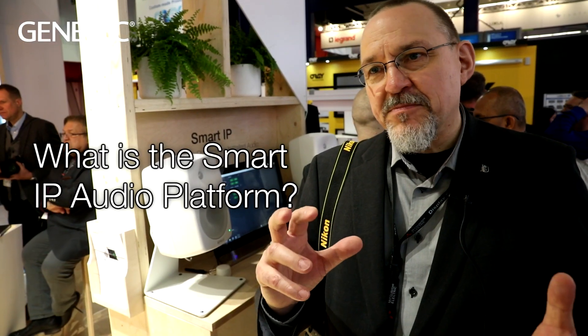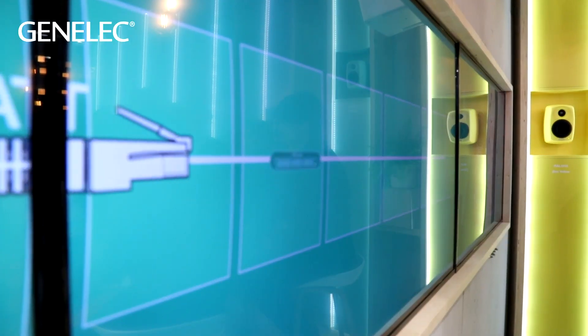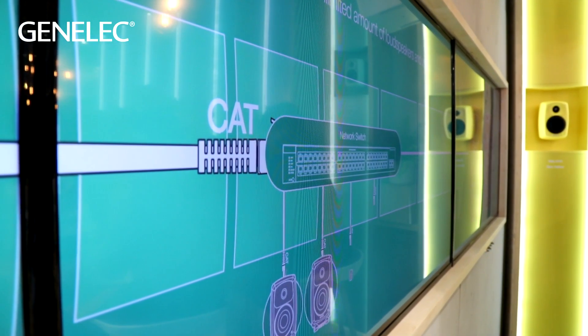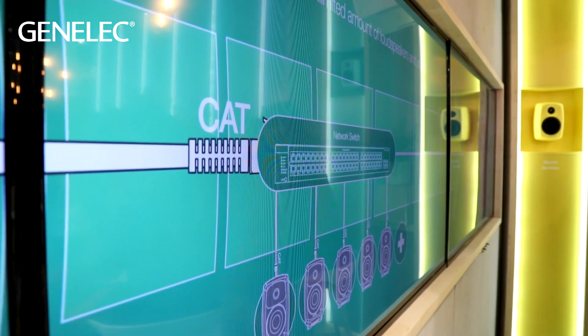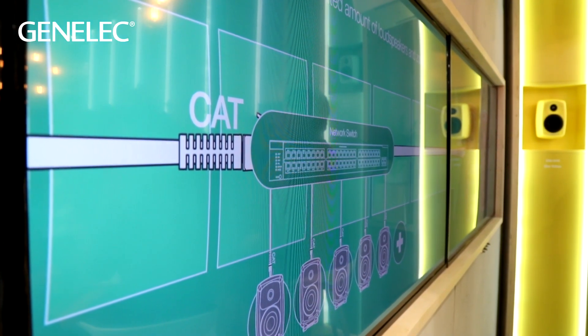The Smart IP Audio Platform combines power going into the loudspeaker on the same cable with audio streaming to the loudspeaker, including all control, management, and monitoring functions — everything on a single cable. This enables loudspeakers with only one cable running to them, and that cable is a standard Cat5 cable using the standard IP network.